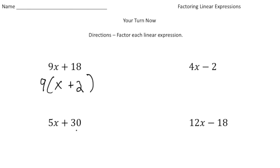Alright, the next one, 5x plus 30. Well, the GCF of 5 and 30 is 5. So it's going to be 5 times. Again, draw parentheses with a plus. So 5 times x is 5x. And then 5 times 6 will give us 30.